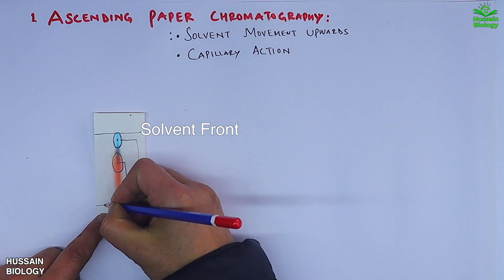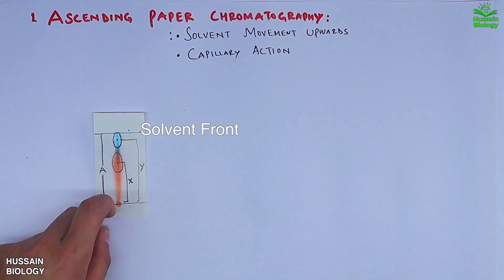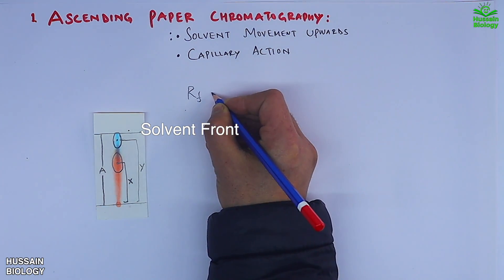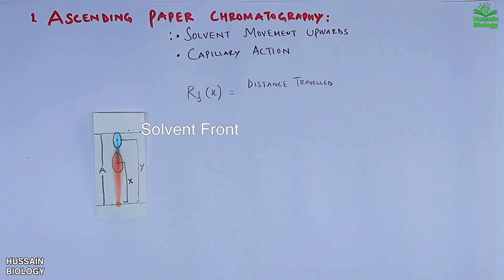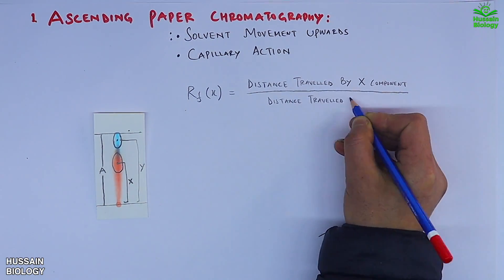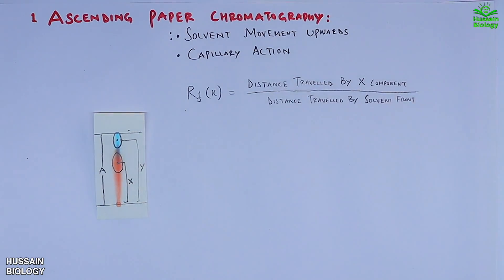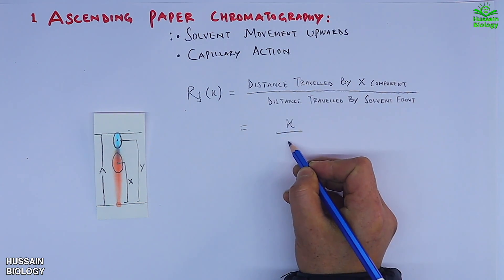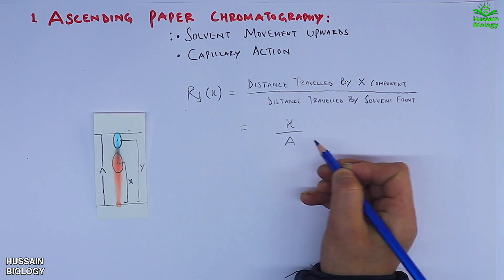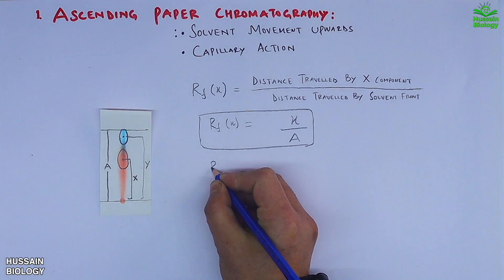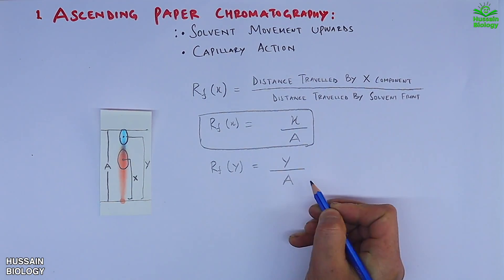The distance from the start to the solvent front is denoted by a. To calculate the Rf value of x, it is the distance traveled by the x component divided by the distance traveled by the solvent front — that is, Rf = x divided by a. Similarly, Rf of y is y divided by a.